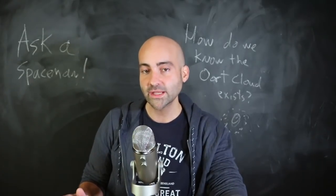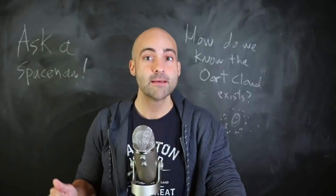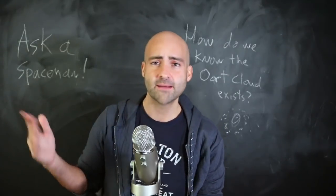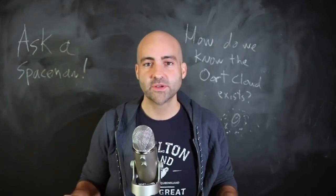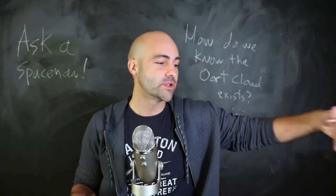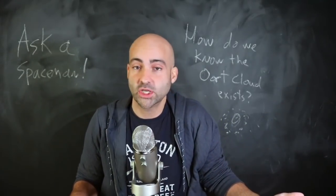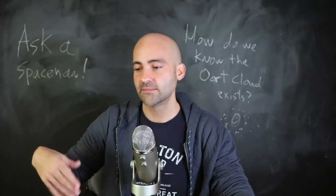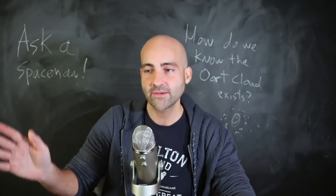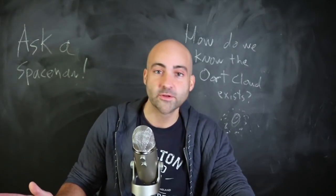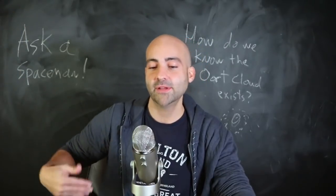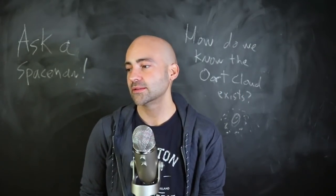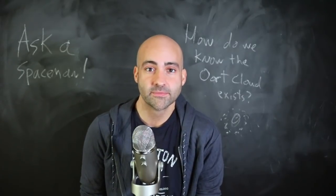It was the middle of the 20th century when we first realized these long-period comets might have a common origin point. Every once in a while a comet appears in the sky, we look through the historical records and say 'this is a new one, no one has ever seen this before.' Then it does its thing — gets scattered out of the solar system, hits the sun, or gets locked into a shorter orbit — and we forget about it. For centuries, astronomers had been cataloging these new comets, asking: where are they coming from?